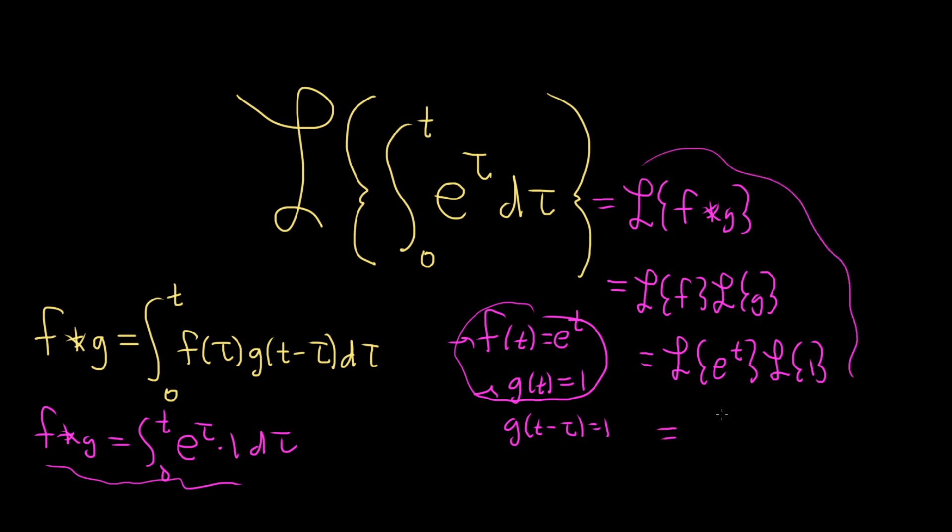The Laplace of e to the t is 1 over s minus 1. That's an easy one. Recall that the Laplace of e to the at is 1 over s minus a. So here a is 1. And the Laplace of 1 is just 1 over s. As a final step, we can combine these and write it as 1 over s minus 1 times s.